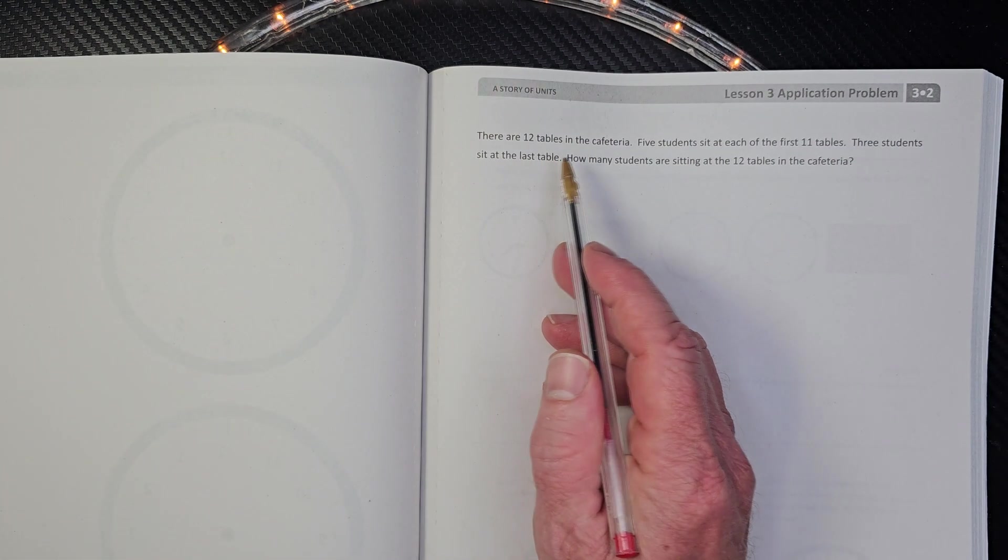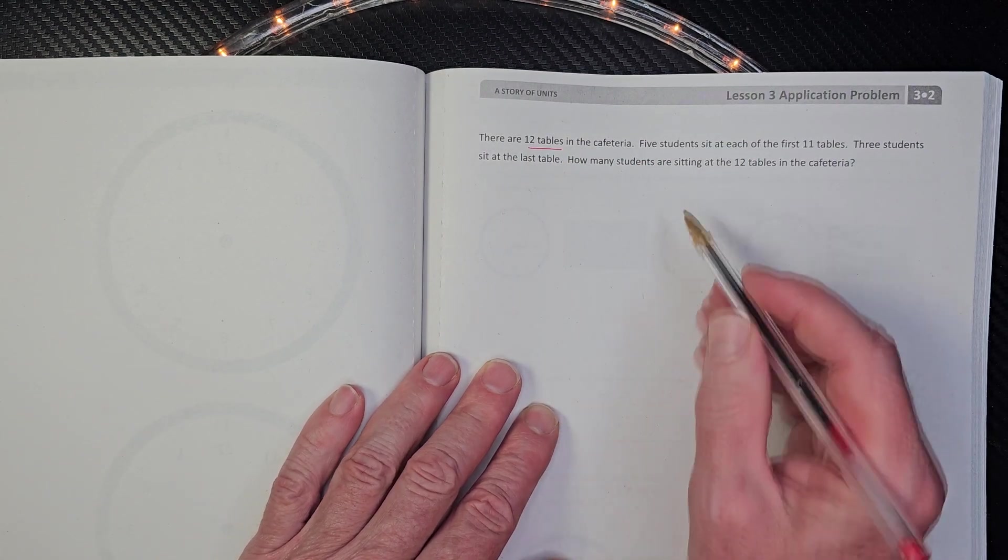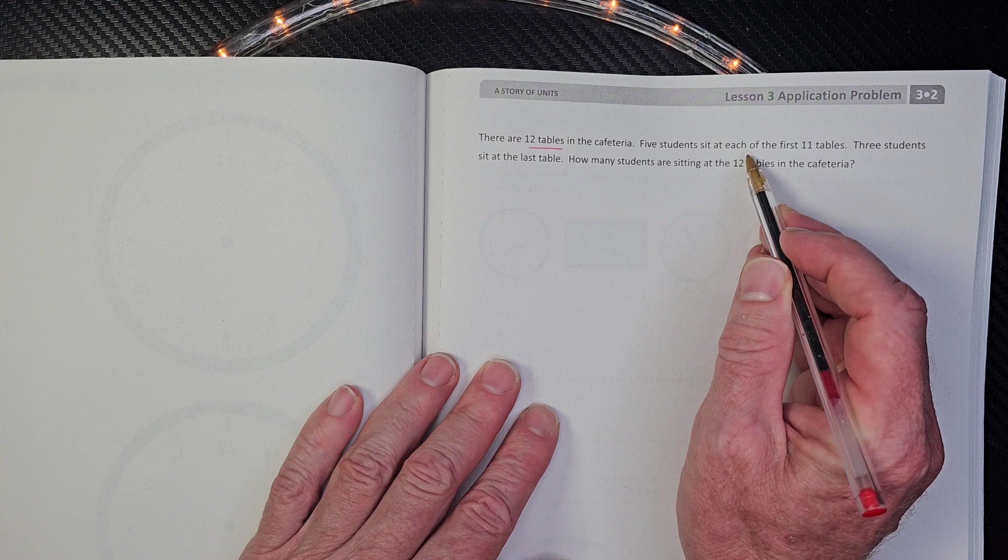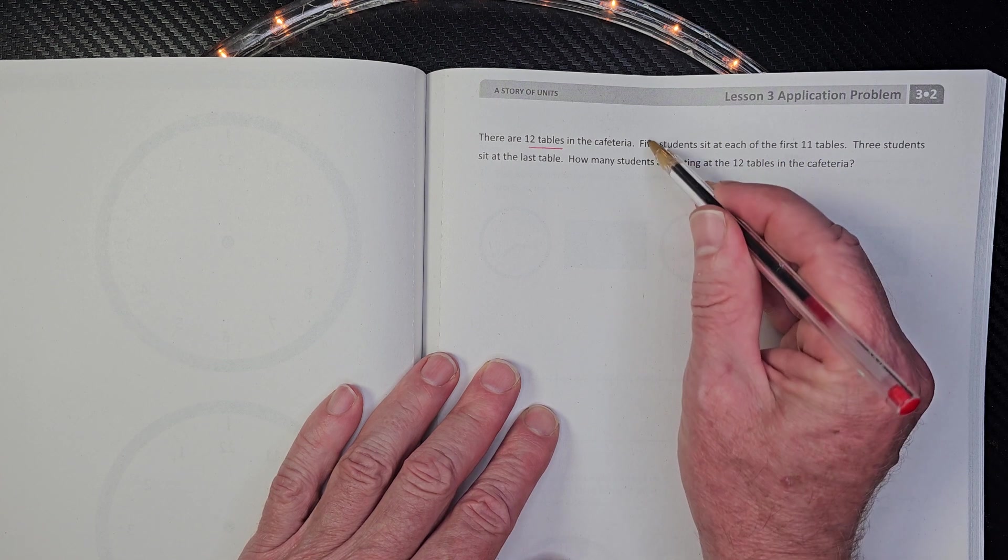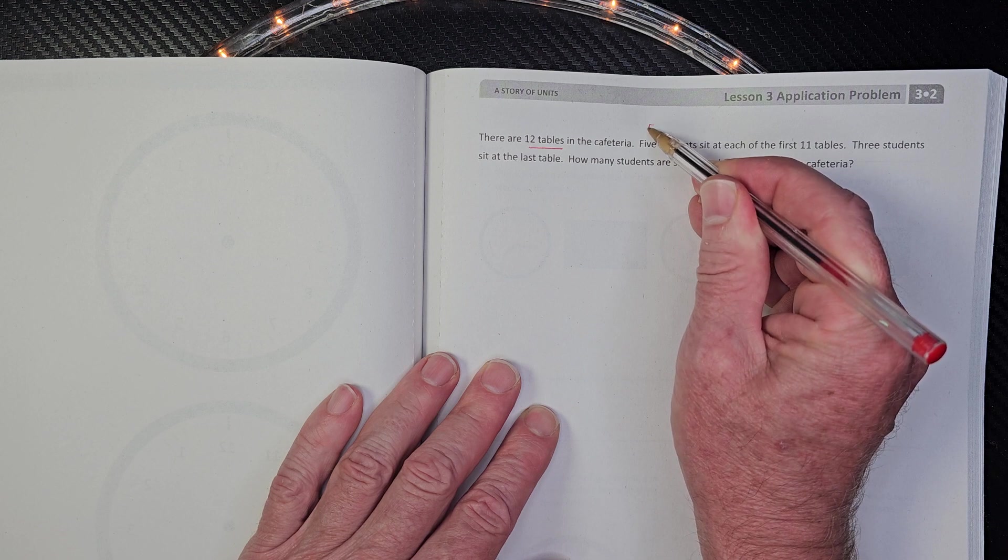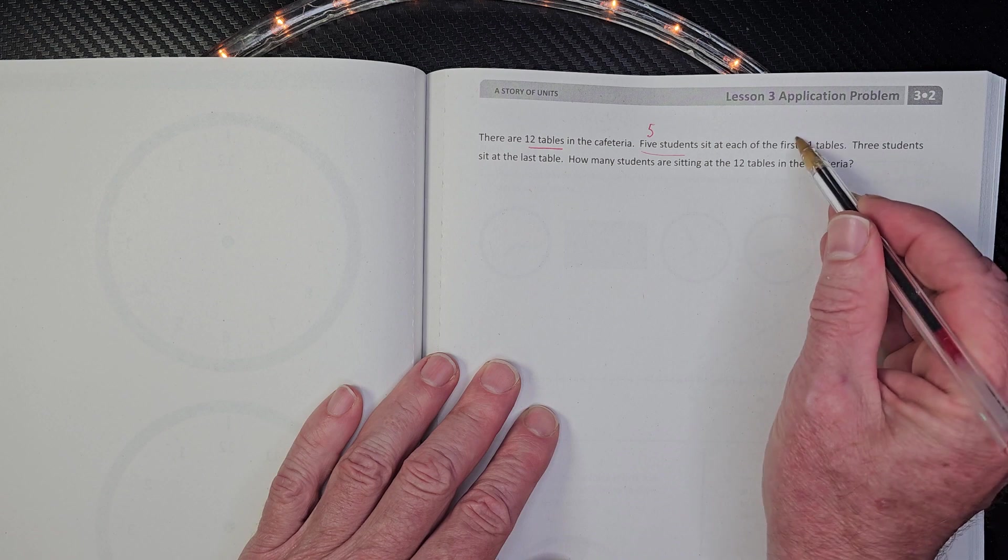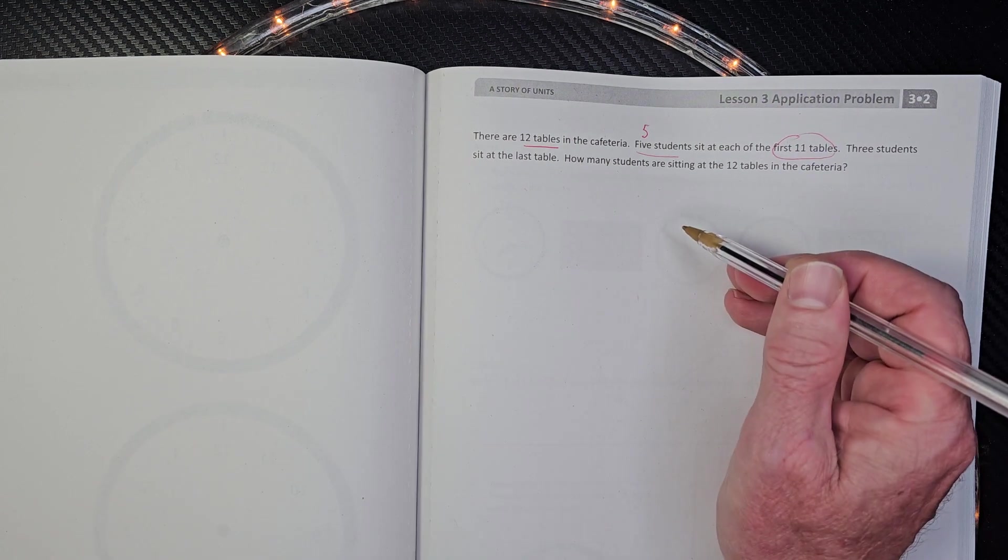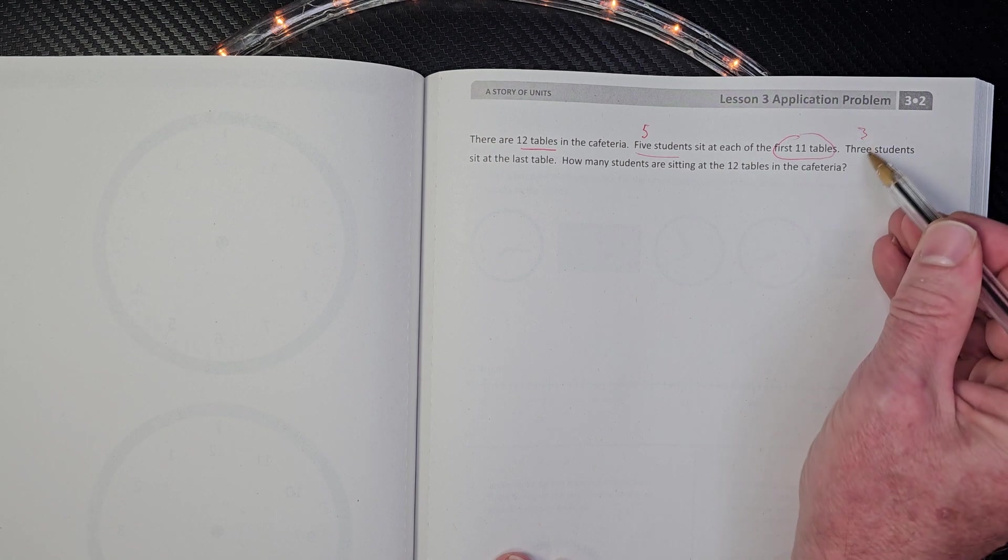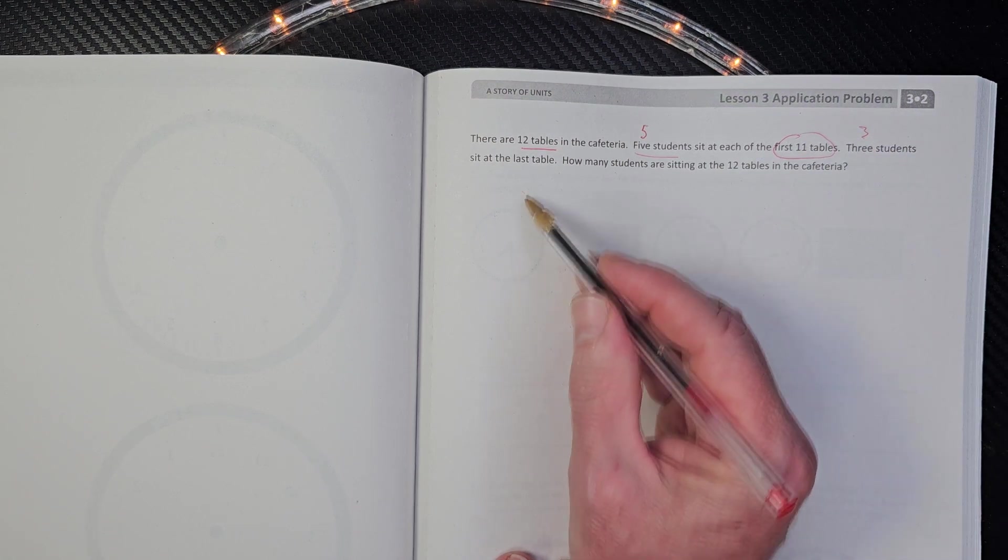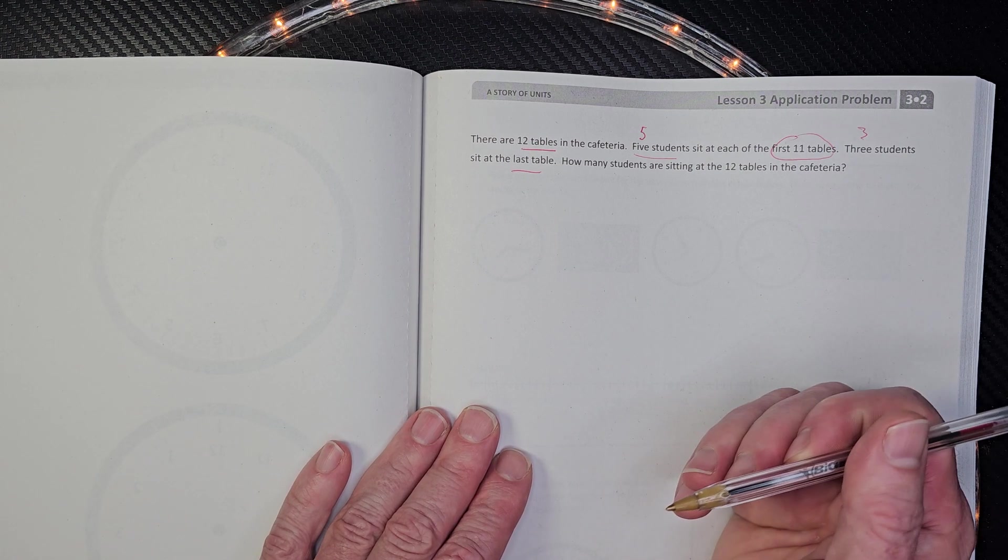There are 12 tables in the cafeteria. Okay, so I'm going to go ahead and underline 12 tables. Five students sit at each of the first 11 tables. So I'm going to write the number five right here. Five students sit at each of the first 11 tables. And three students right here, I'm going to put a three right here, sit at the last table. How many students are sitting at the 12 tables?